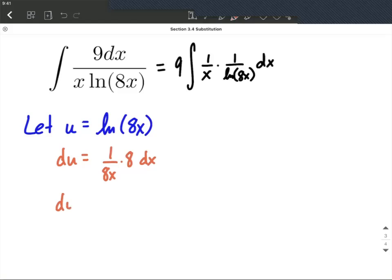So this leaves us with du equals, with a little bit of simplifying, 8 in the numerator, 8 in the denominator, we are left with 1 over x dx.